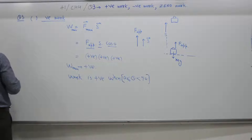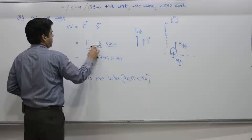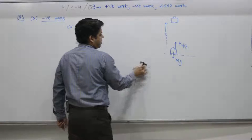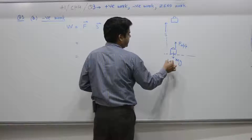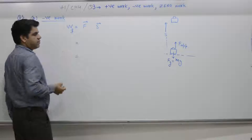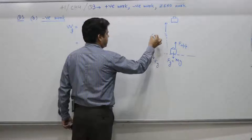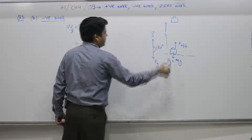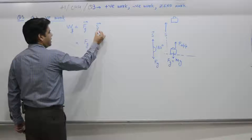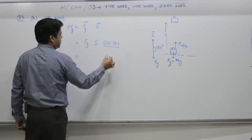B part: Negative work. This is the applied force. Gravitational force Fg acts downward; its magnitude is equal to mg. Work done by gravity: gravitational force acts downwards, displacement of the particle is upwards, angle between the two is 180 degrees. It is F-gravity dot S — magnitude of gravitational force, magnitude of displacement, cos of angle between the two — cos 180 is minus 1.